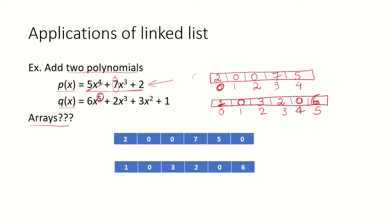Now if we have to add these two arrays we cannot directly, because the size of the two arrays is different. That means when we add two arrays we will have to make both arrays the same size, and that size would be equal to the highest exponent plus 1. So if the highest exponent is 5, our array size should be 6 to include x to the power of 0 as well.